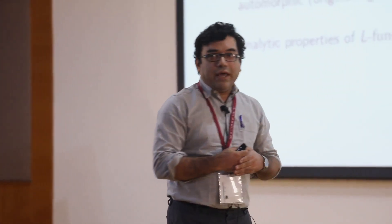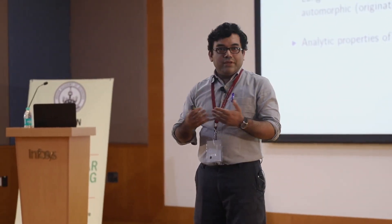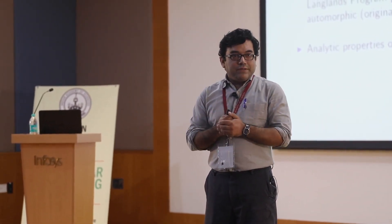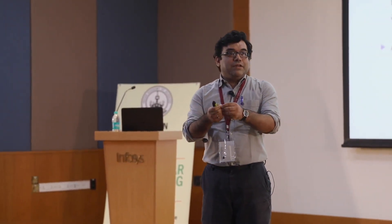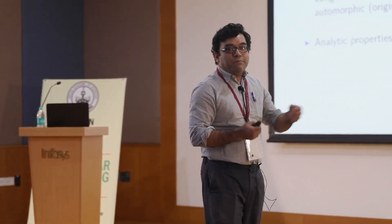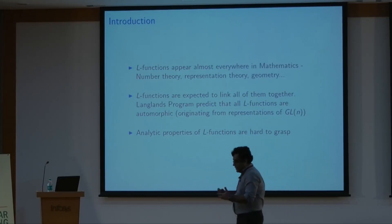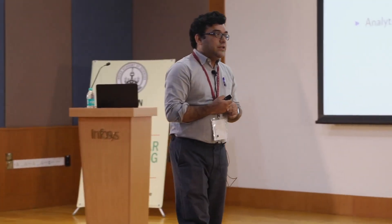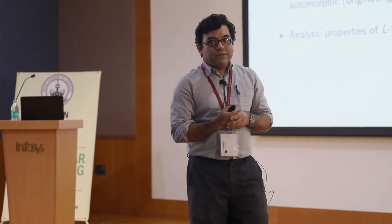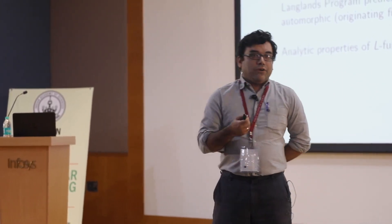There is a program called the Langlands program, which says that all the L-functions you encounter in mathematics — even if coming from number theory — should have a counterpart coming from representation theory as well. There are certain special types of representations called automorphic representations of general linear groups, and the L-functions attached to them are called automorphic L-functions. It is conjectured that any L-function you see is automorphic.